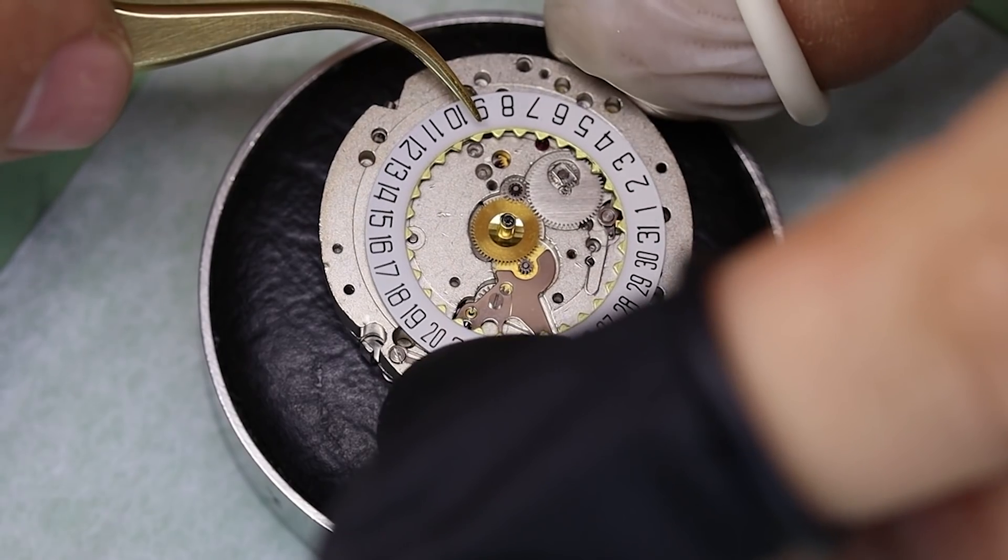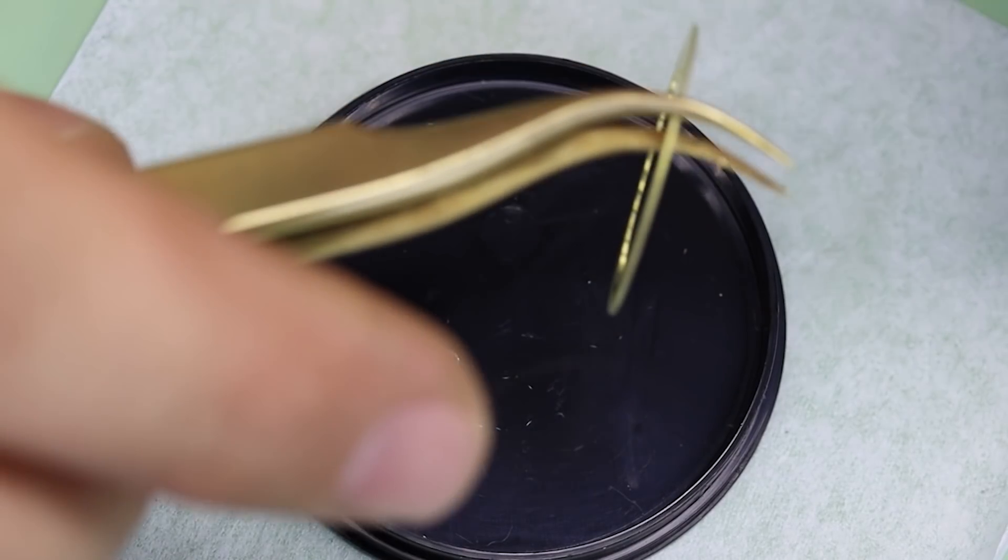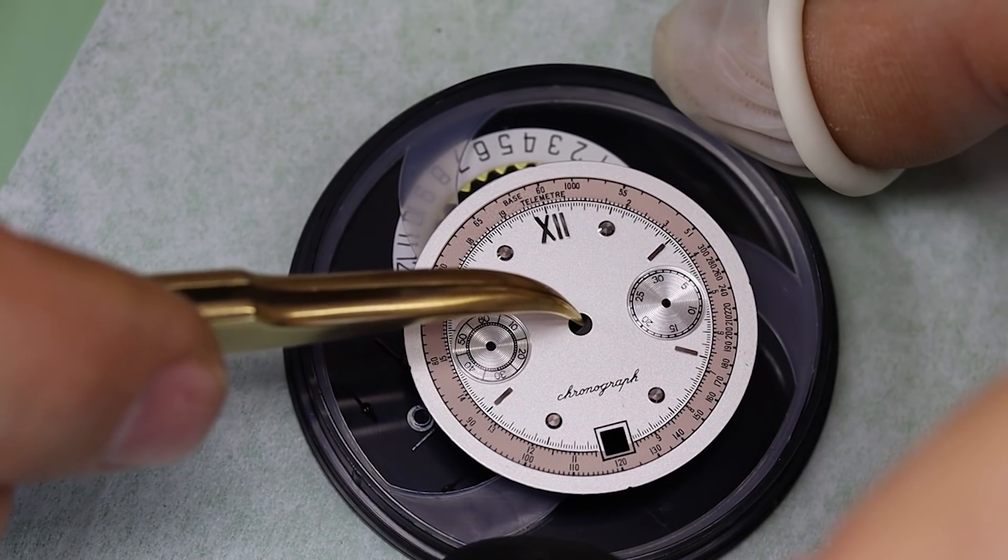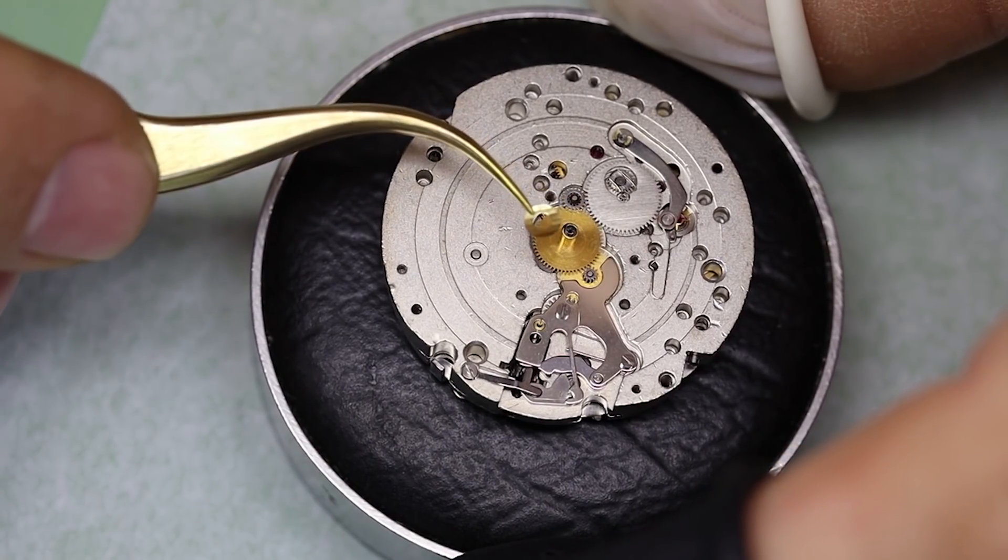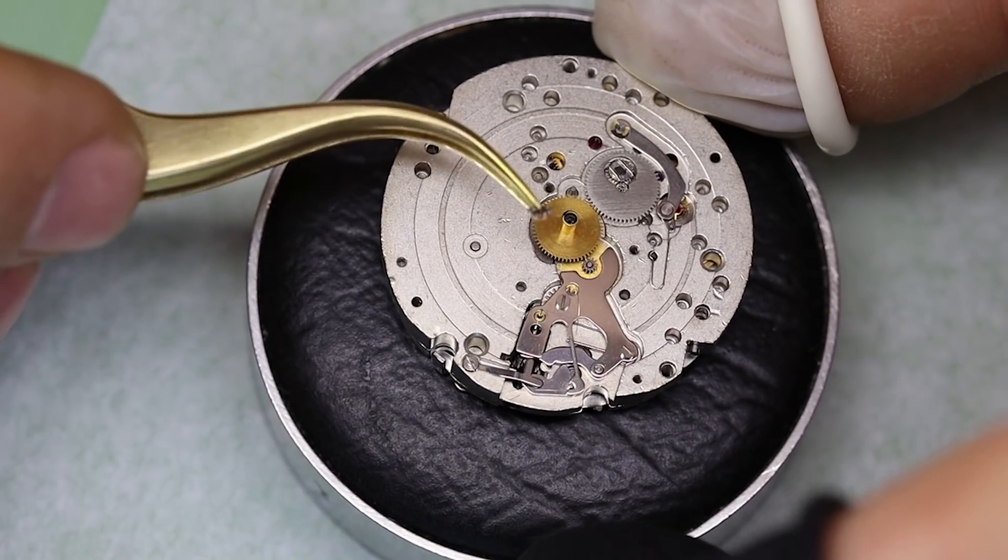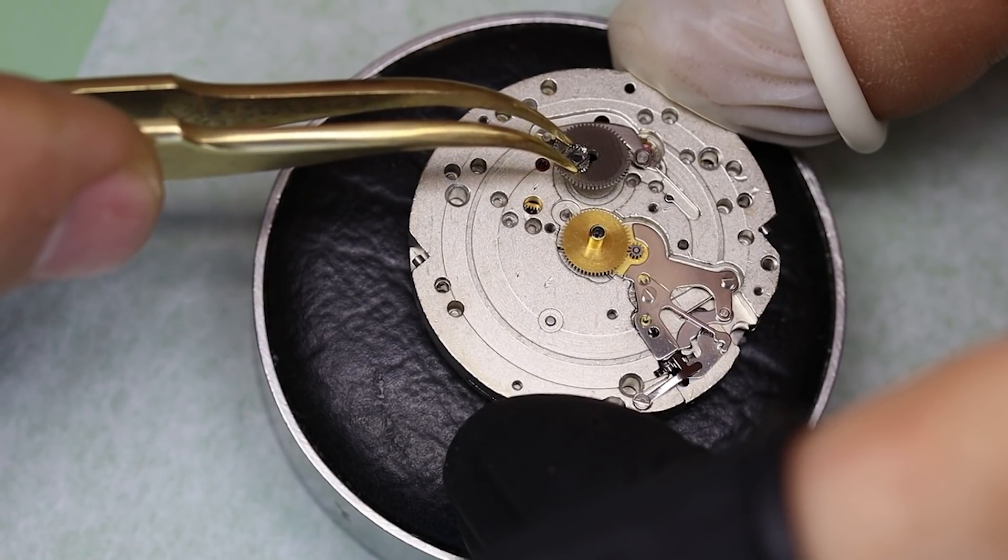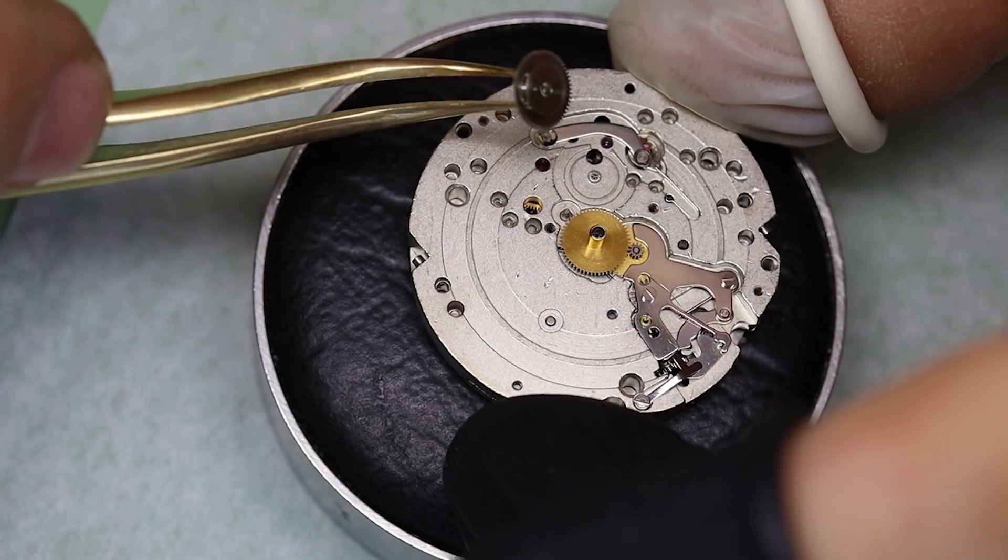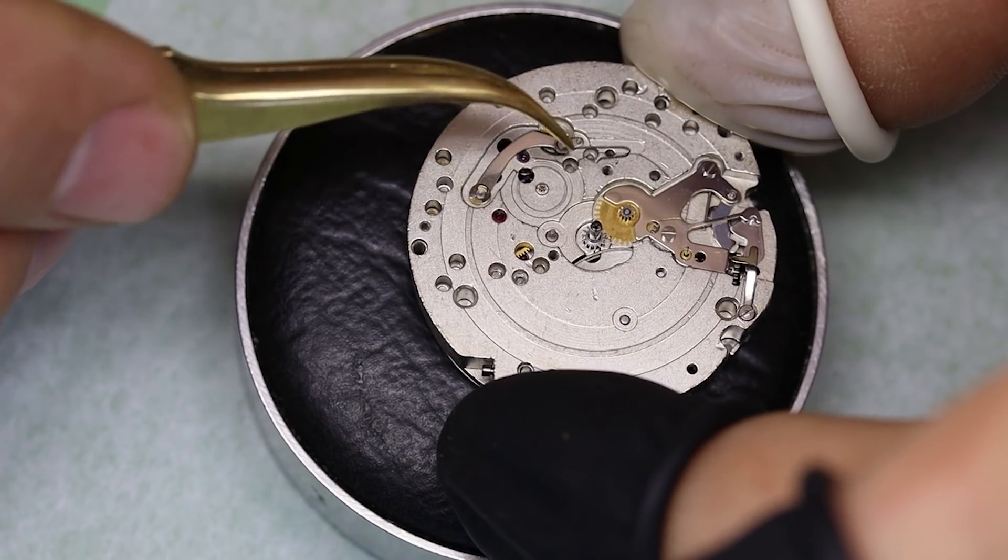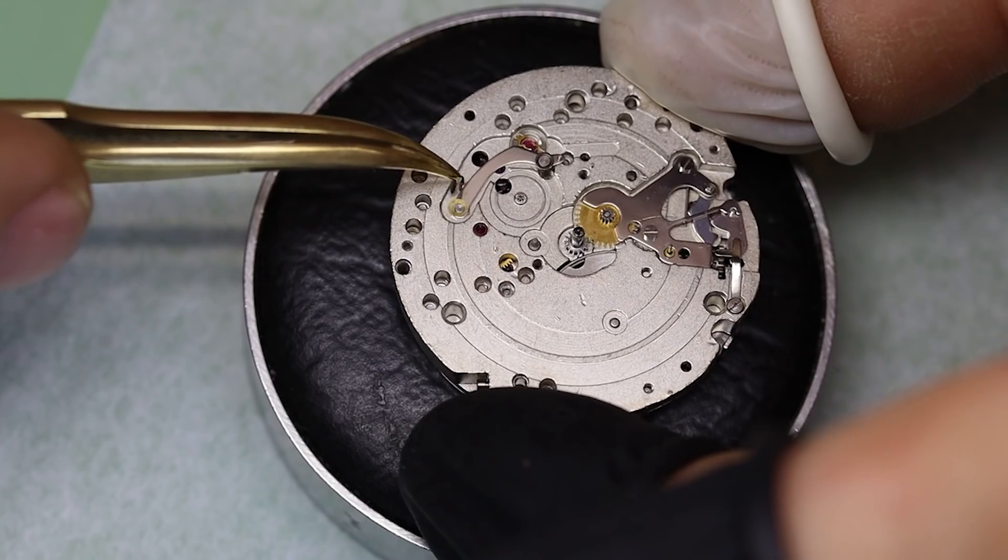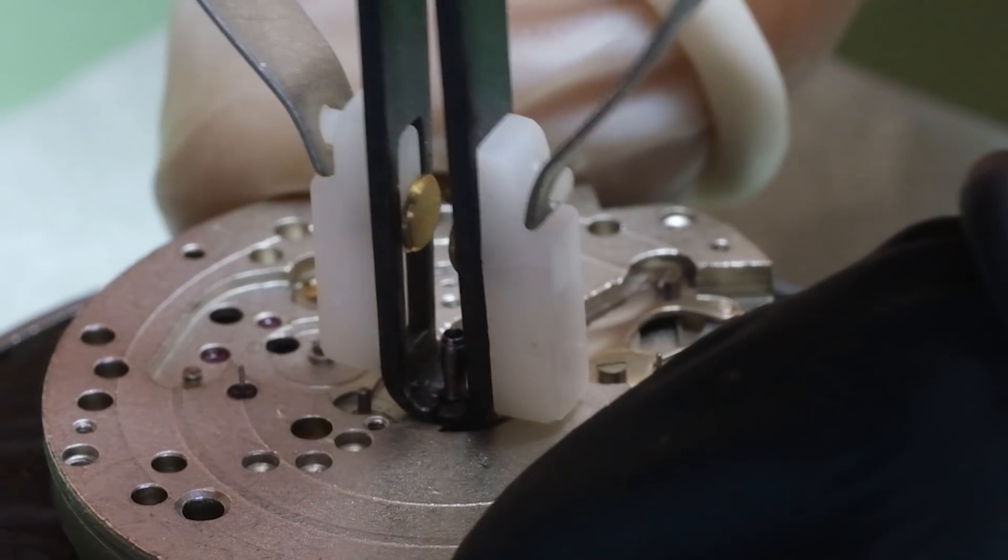The calendar mechanism is pretty different from the 7734. It has a completely different way of flipping over the date. The date is flipped over by this wheel here, and it has a satellite wheel that rotates around the pinion in the main plate. That means it has to be set up properly to actually flip the date over, otherwise it won't do it well or you won't be able to do the quick set.